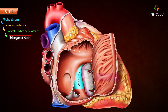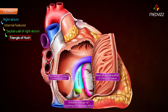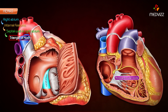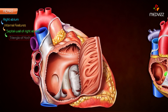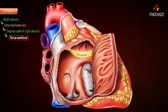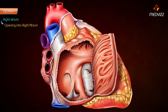The triangle of Koch is a triangular area bounded in front by the base of the septal leaflet of the tricuspid valve, behind by the anterior margin of the opening of the coronary sinus, and above by the tendon of Todaro, a subendocardial ridge. The atrioventricular node lies within this triangle. The torus aorticus is an elevation in the anterior superior part of the septum produced by bulging of the right posterior sinus of the ascending aorta.